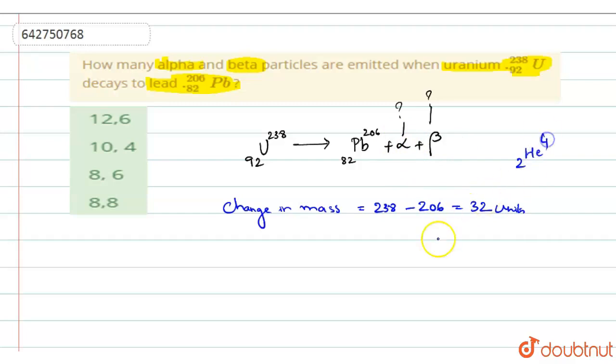One alpha particle corresponds to 2He4, right? One alpha particle has 4 mass number. So you have 32 here. So 32 by 4 is 8. So you can see that 8 alpha particles are emitted.